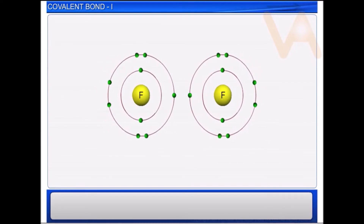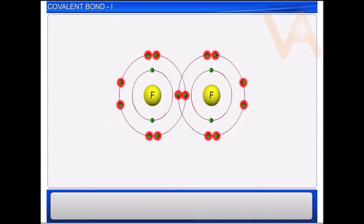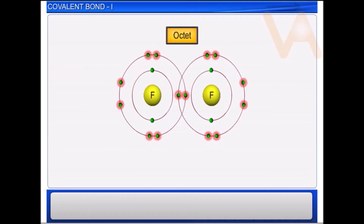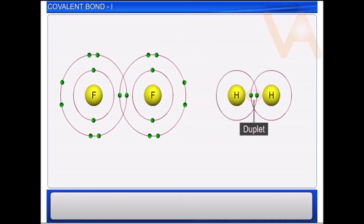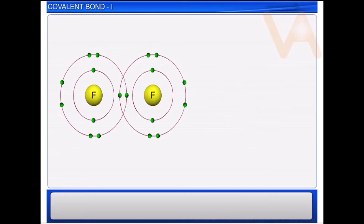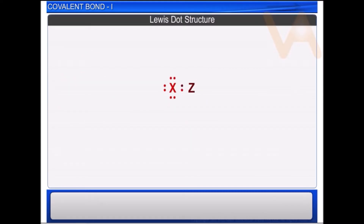During covalent bond formation, each atom tries to attain octet, i.e. 8 electrons in its valence shell, or duplet — 2 electrons in the first shell. The formation of covalent molecules can be understood from the Lewis dot structures, in which the valence electrons of all the bonded atoms of a molecule are represented by dots.